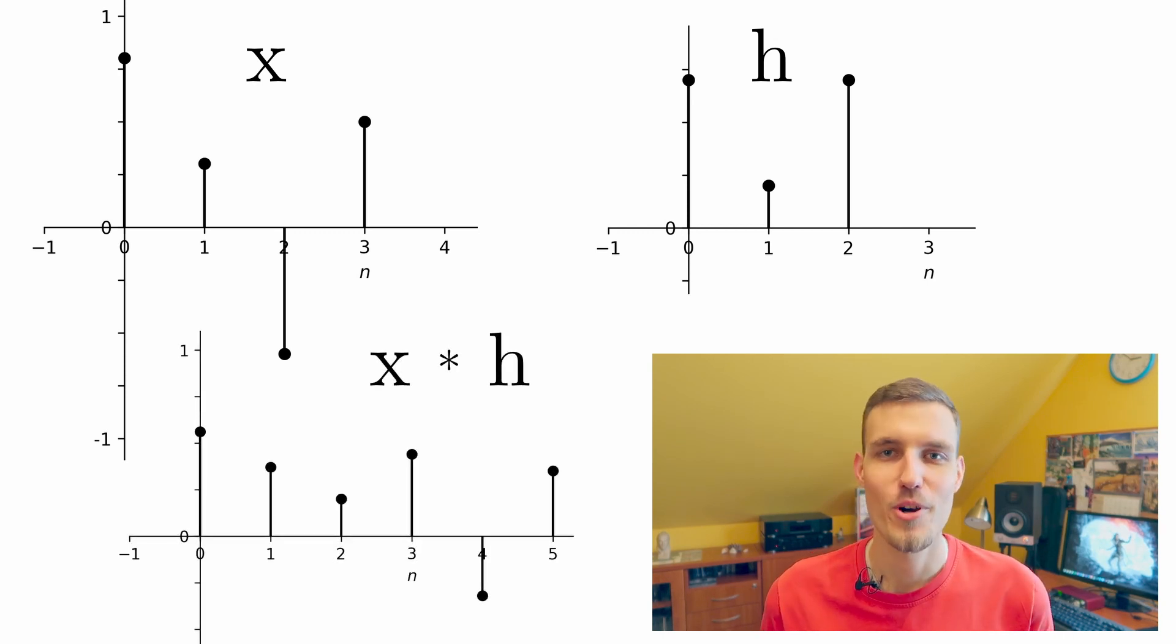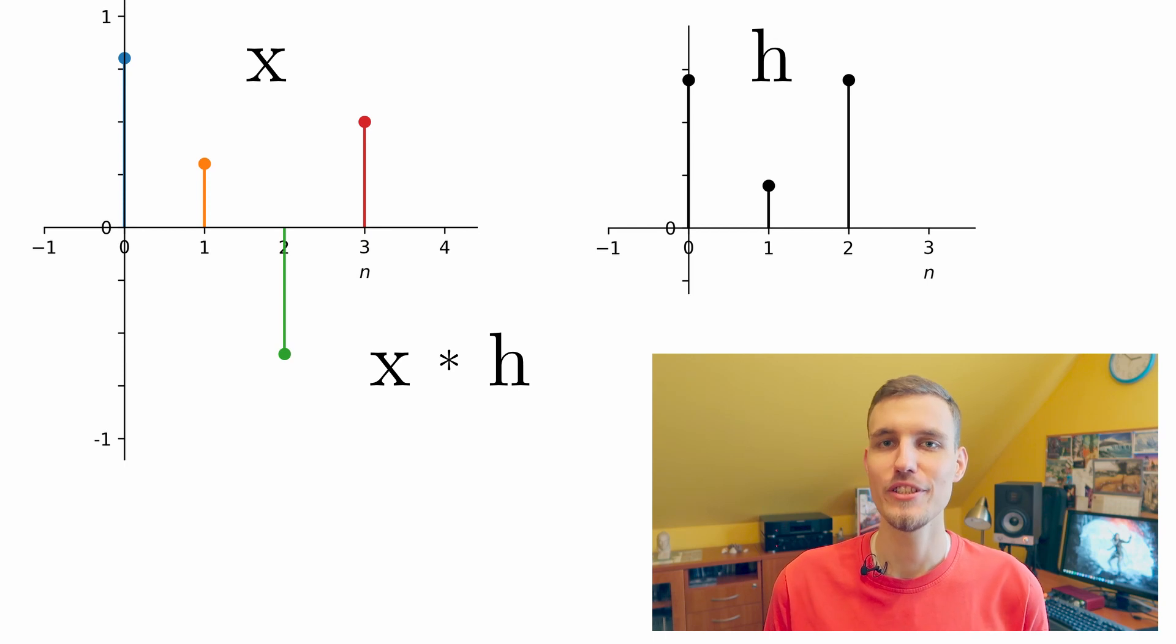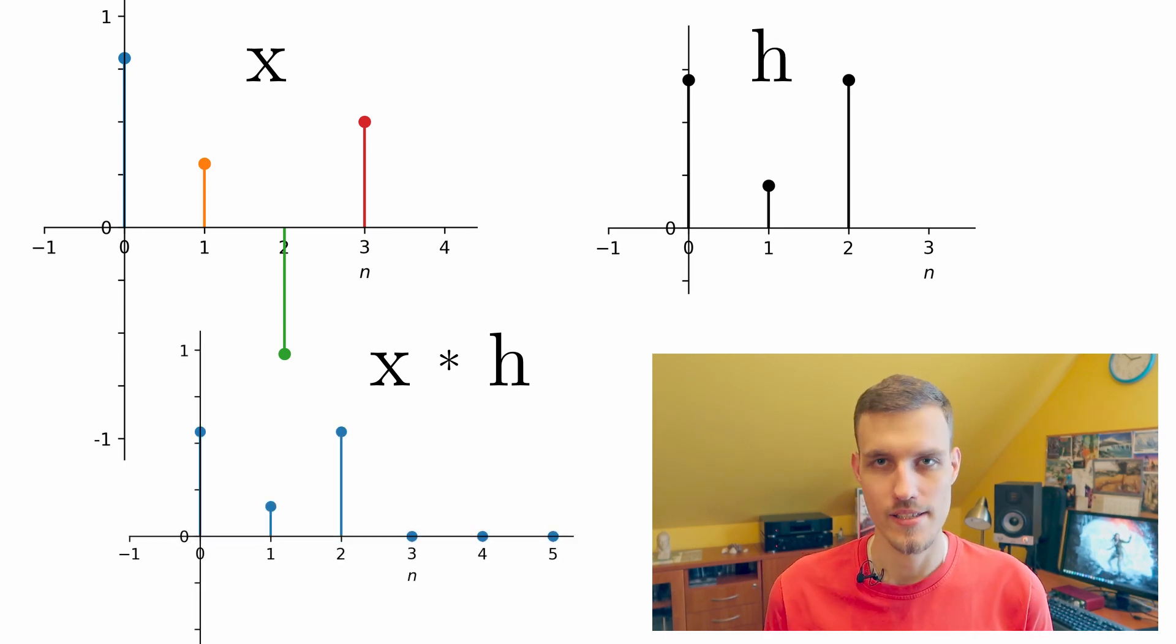Well, it's not very informative, is it? Then let's use some color coding and see what happens if we only use certain samples of the input signals, which is equivalent to fixing the index k and looking at the output over the time index n. If we only insert the first input sample, at the output we'll get something like this, which is basically a scaled version of the impulse response.